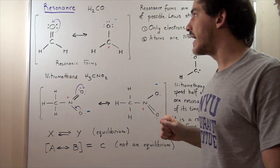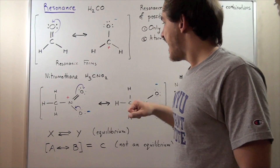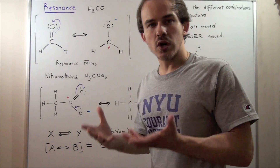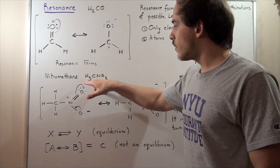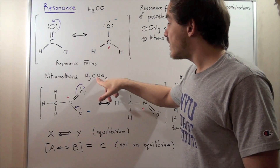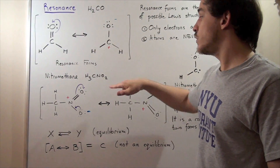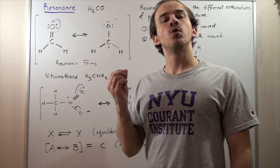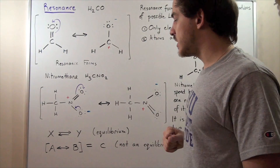Let's look at nitromethane as a second example in which we draw the resonant forms. Nitromethane has one N, two O's, one C, and three H's. To draw our Lewis dot structures, let's count the valence electrons. We have three valence electrons from H, four from carbon, five from N, and twelve from the two O's — giving us a total of twenty-four valence electrons.